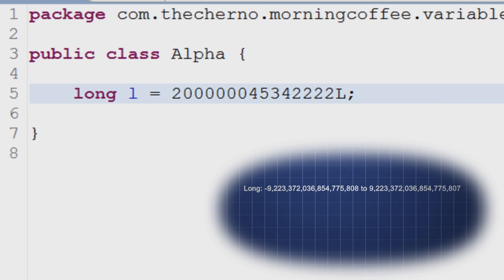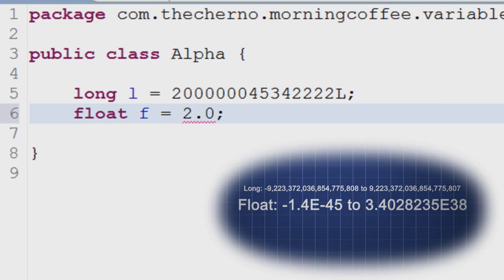But wait, if you think that's huge, wait till you see the next two. Float is the first number variable so far to be able to contain decimal values. It contains anything from negative 1.4E-45 to roughly 3.4E38, a number that is 39 digits long.